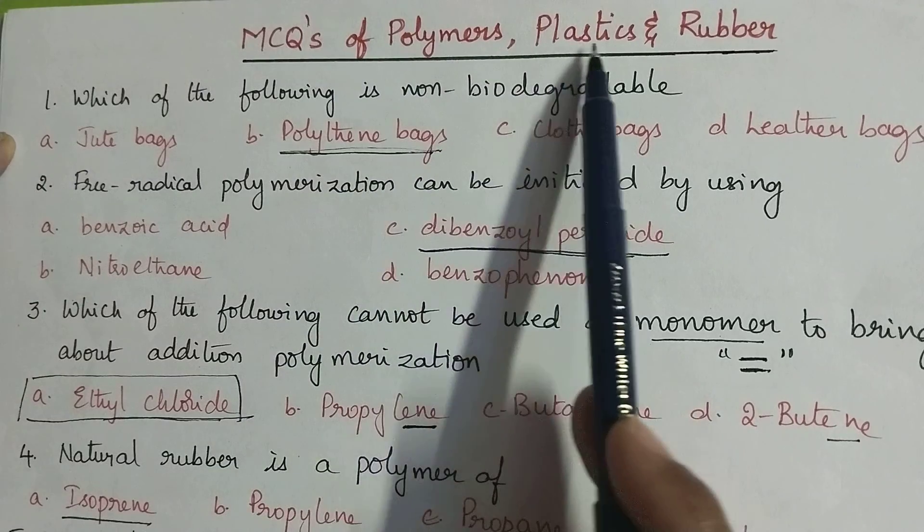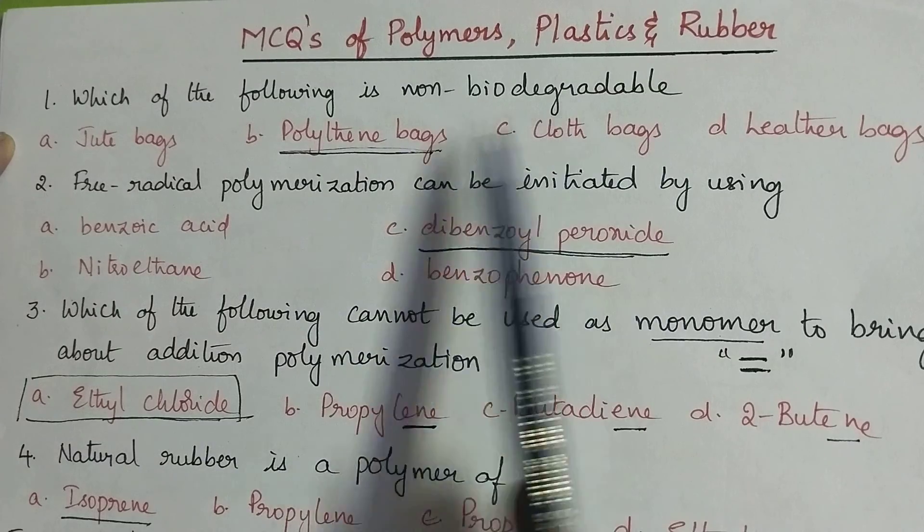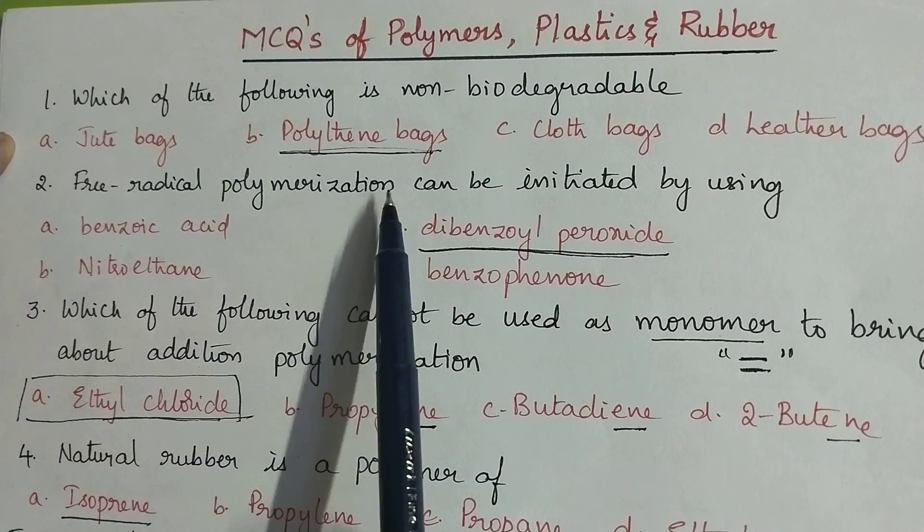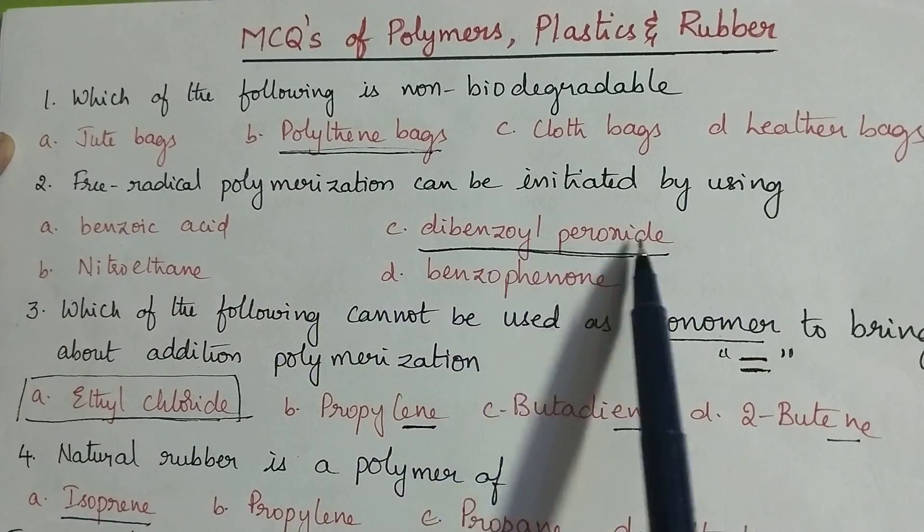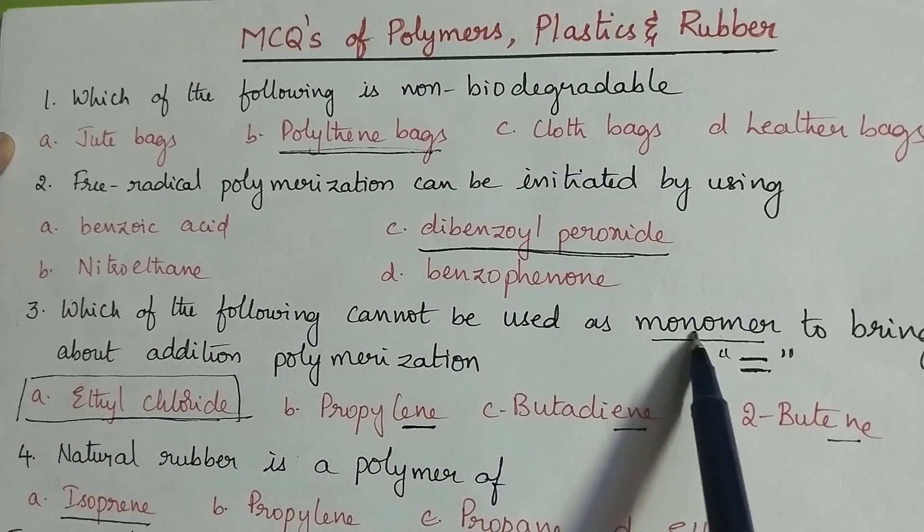Which of the following is non-biodegradable? Polythene bags are non-biodegradable. Free radical chain polymerization can be initiated by using dibenzoyl peroxide as the catalyst. Which of the following cannot be used as the monomer to bring about addition polymerization?